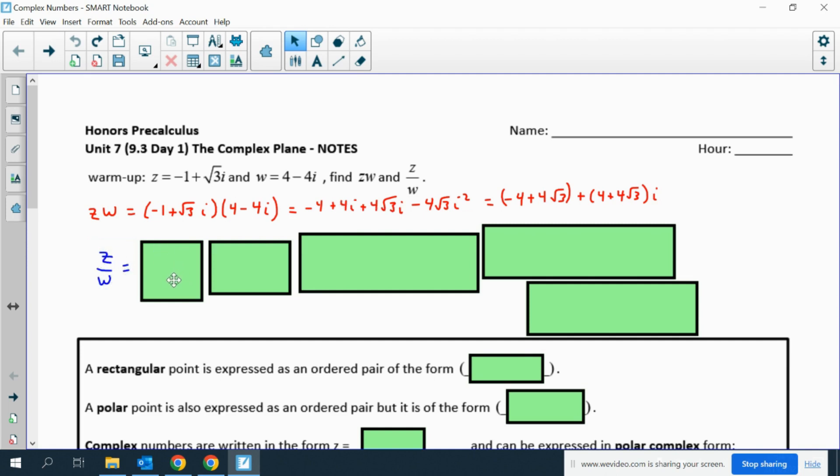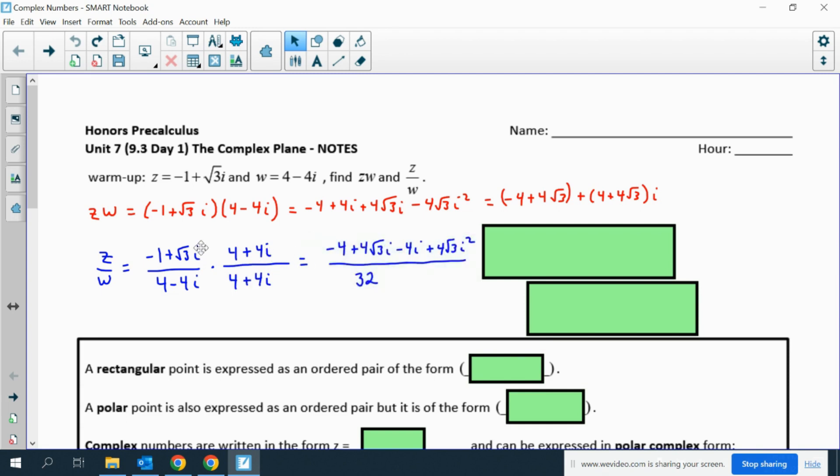We can also divide complex numbers. Remember that we don't allow imaginary numbers in the denominator, so we multiply by the conjugate on the top and bottom. Then we use the distributive property. The distributive property on the bottom has the added benefit of eliminating the middle two terms, so we just end up with 16 times negative 16 i squared, or 16 plus 16.